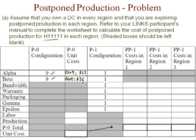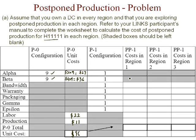Labor and production at the manufacturing plant: labor cost is $22 and production cost is $11, making the total P0 cost $96. This cost has already been incurred on this product. It will be added to any additional cost incurred while producing this postponed product in region 1, region 2, and region 3. So this $96 will be carried into the calculation to ensure it's added to everything else we do with this production.